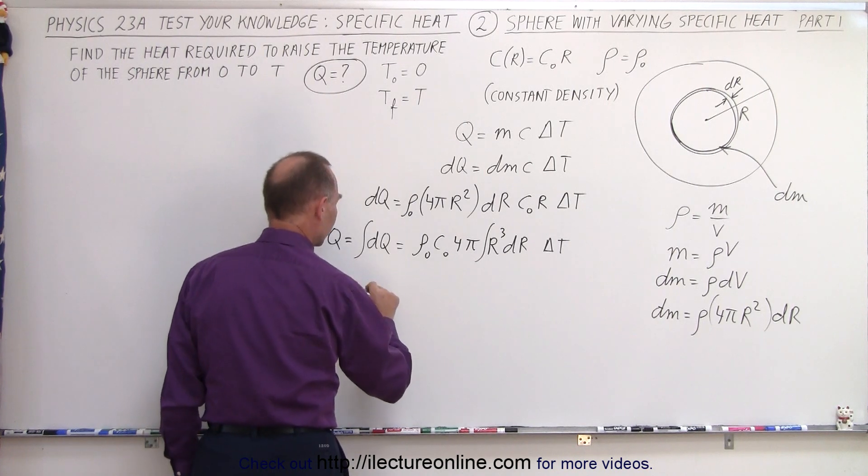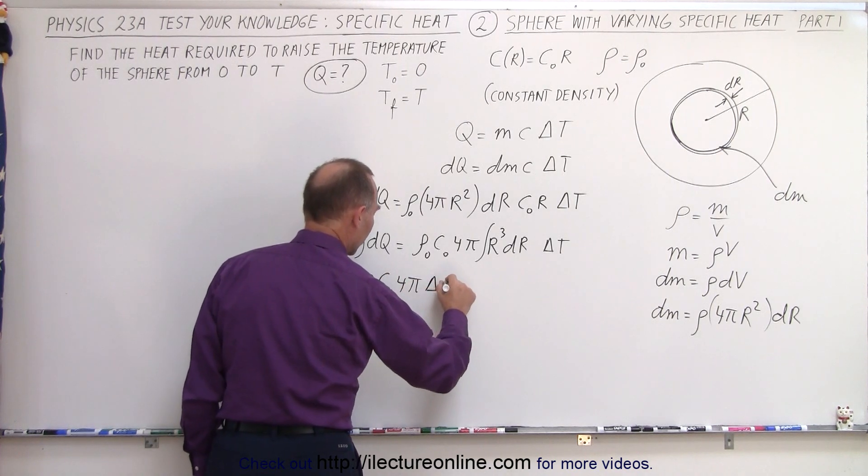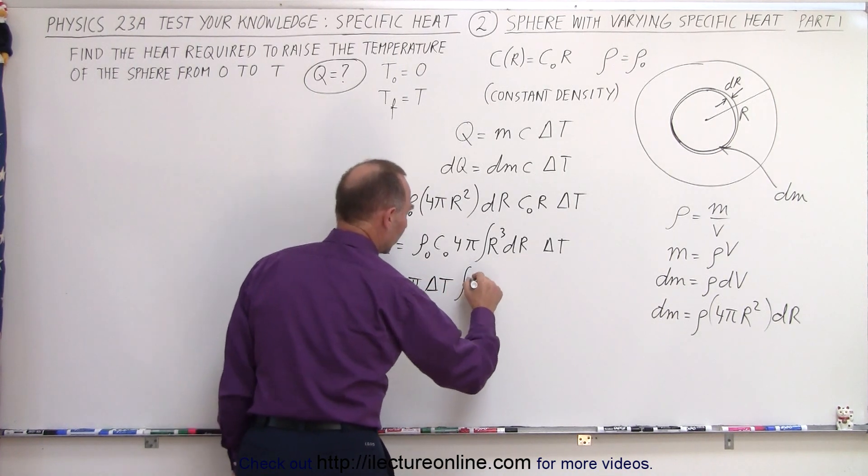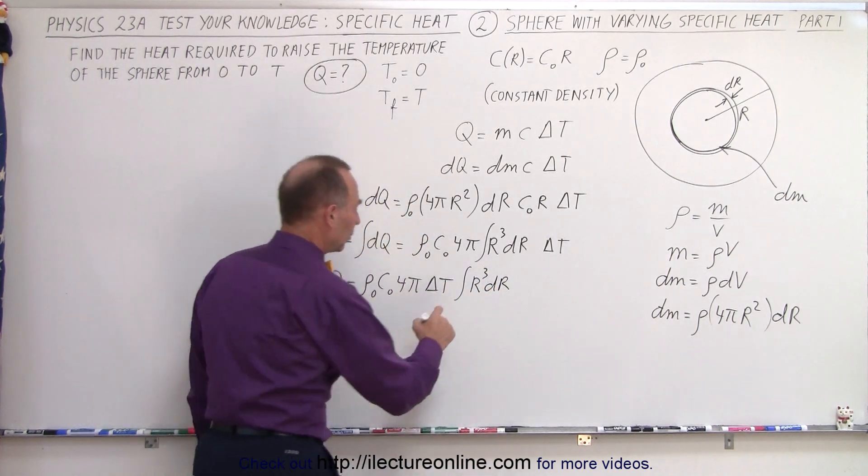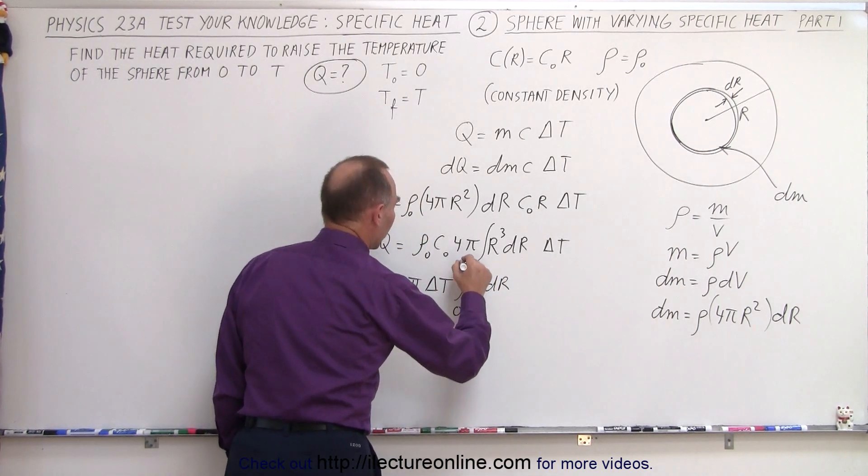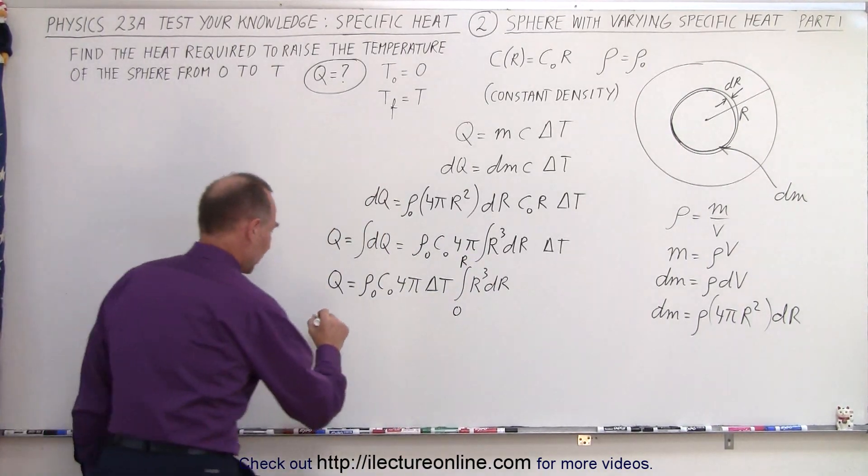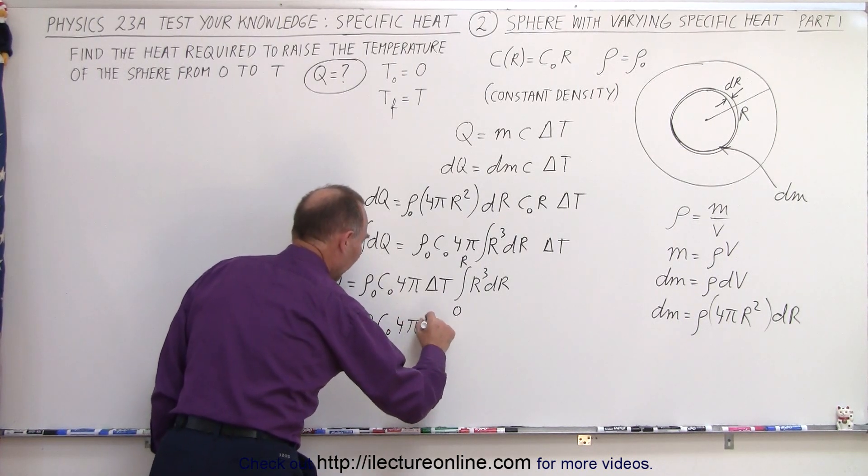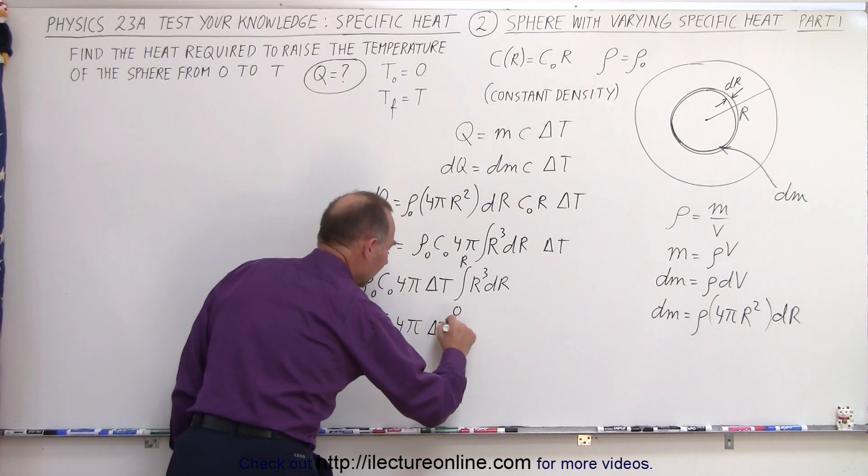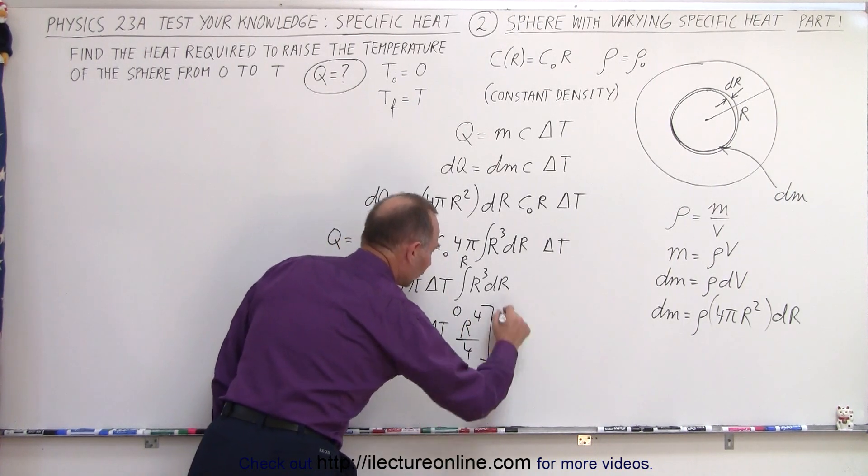So that means that Q is equal to, let's gather all the constants, 4 pi, let's take the delta t and put it out here as well, times the integral of r to the third dr, and of course that would be from r equals 0 to r equals r, and then finally when we integrate that, we get Q is equal to the density times c sub-naught times 4 pi times delta t times r to the fourth over 4 from 0 to r.